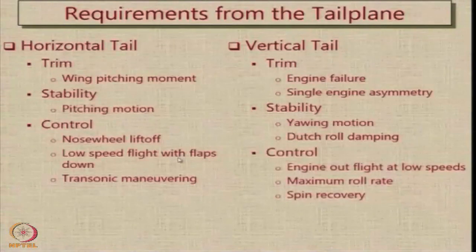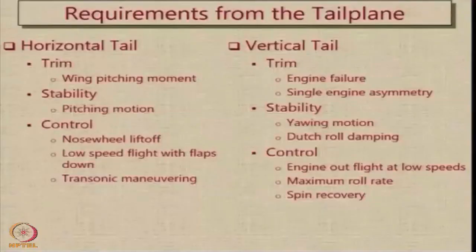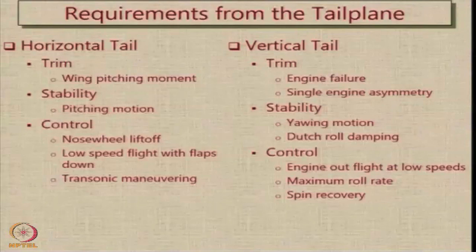We also need a vertical tail to provide the required moments to control the aircraft. If you have an engine-out flight at low speeds, we need to control the aircraft. There is a specified requirement for some roll rate which the aircraft should have, and we also need to recover from spin — the vertical tail plays a very important role in spin recovery. So the horizontal and vertical tail together, called the tail plane or empennage, are required to meet the three basic requirements of trim, stability, and control.